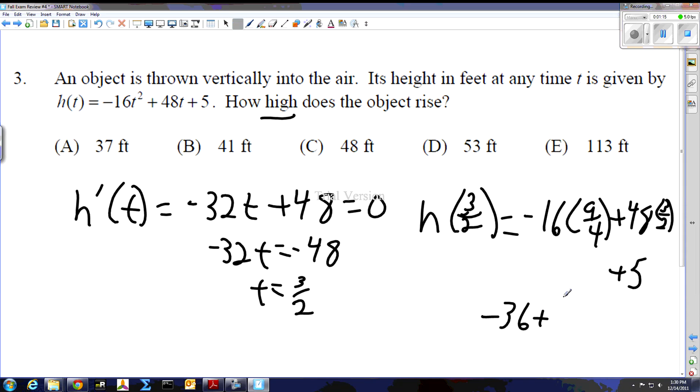And 24 times 3 is 72 plus 5, and if we do this out we get 41 for our final answer. So it reaches a maximum height of 41 feet at a time of three and a half seconds.